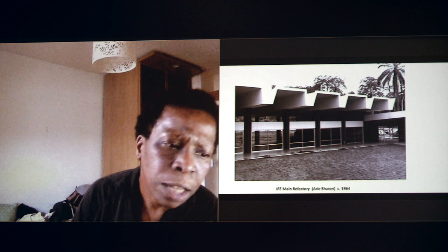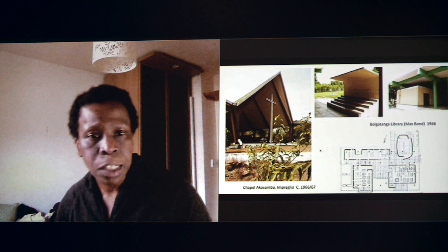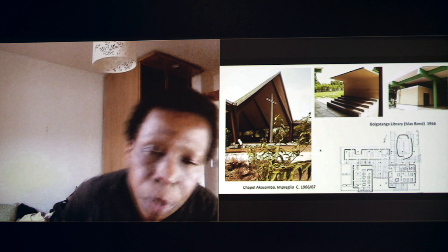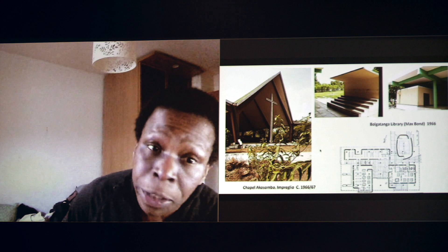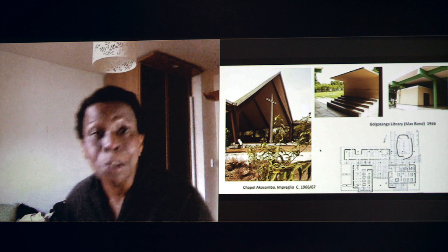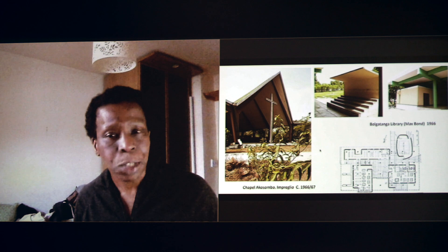I then considered what other buildings have had a more liberal approach to space. To the left there's a chapel in Akosombo, Ghana — even in religious architecture this isn't always the case. It was designed by Impregilo, the builders of the Akosombo Dam, as a totally open-air structure using cross-laminated timber — no concrete, or at least only in the foundations. This is 1966–67. So the ability to use space and materials not dependent on imported cement was already there in the 1960s.